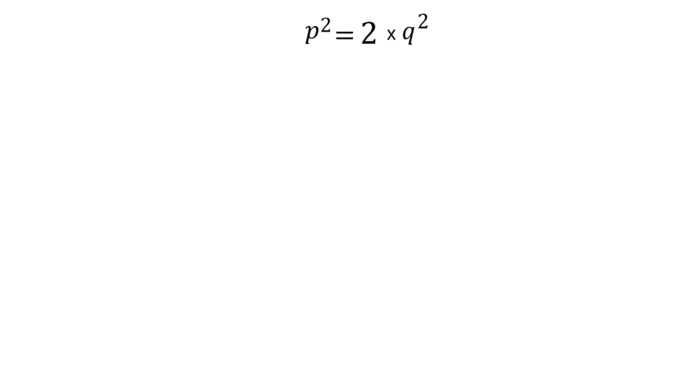Implication is that, in this equation, the result of this term p squared gives us a whole number which is a square. Whereas, the term 2q squared also gives us a whole number, but it is not a square. Therefore, these two numbers cannot be equal. And hence, the term p squared cannot be equal to the term 2q squared.